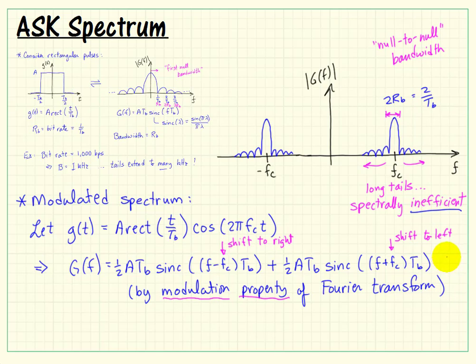while much of the energy is concentrated about f_c, a lot of the significant energy is spread on both sides. This has some disadvantages, especially if you're trying to operate other carriers nearby, because now you can have potential for crosstalk between one carrier to the next.